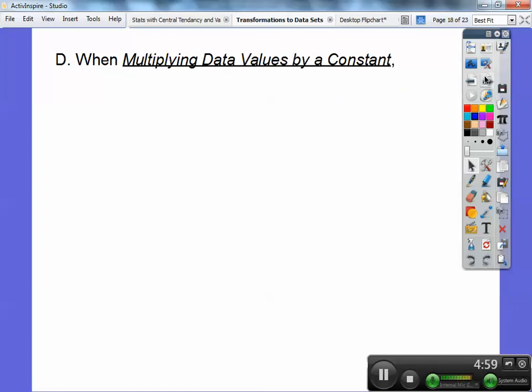Okay, now the rule on when multiplying your data sets by some constant value, everything gets multiplied. The mean, the median, the mode, and the range, and the standard deviation. It gets multiplied.